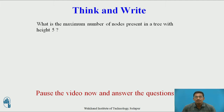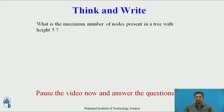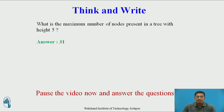Now, what is the maximum number of nodes that may be present in a tree with height 5? You can pause the video and answer. The answer to this question is 31 — a maximum of 31 nodes may be present in a binary tree with height 5.